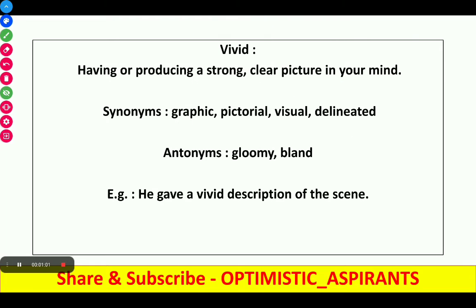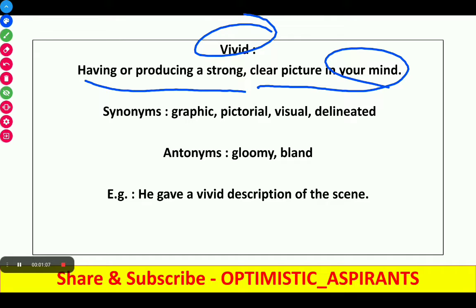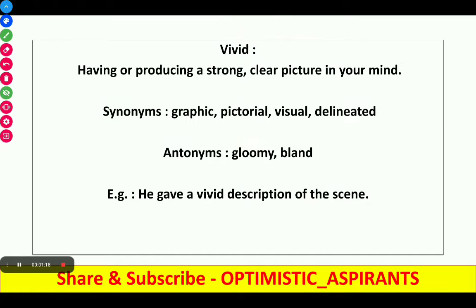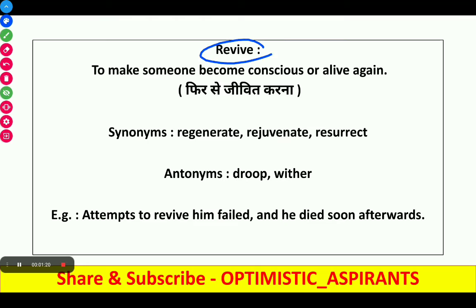Next word is vivid. It means producing a strong, clear picture in your mind. Synonyms are graphic, pictorial, visual, and delineated. Antonyms are gloomy or bland. Example: 'He gave a vivid description of the scene.'